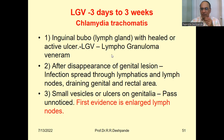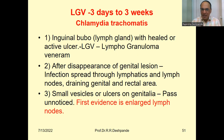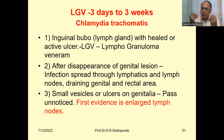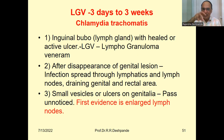What is the pathology? After disappearance of the genital lesion — that is, ulcers — the infection spreads through the lymphatics, and lymph nodes draining the genital and rectal areas become enlarged. Small vesicles or ulcers on the genitalia many times pass unnoticed. The patient doesn't get a clear-cut idea about the ulcer; sometimes they are a little painful, sometimes not, so they just neglect those ulcers. The most important painful condition then appears in the inguinal region — lymph gland enlargement.